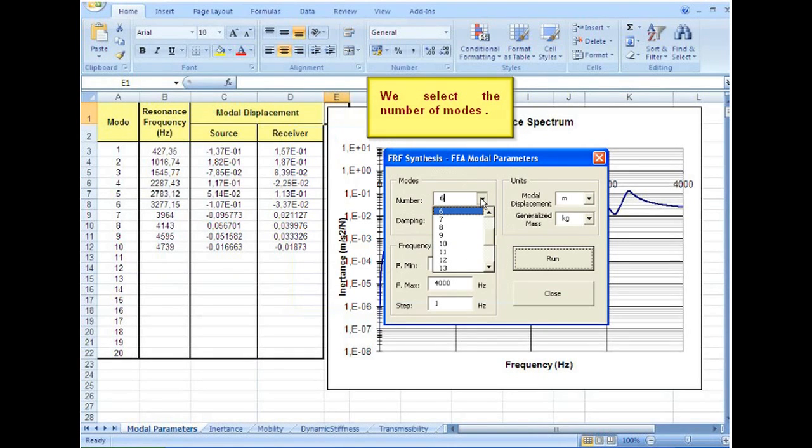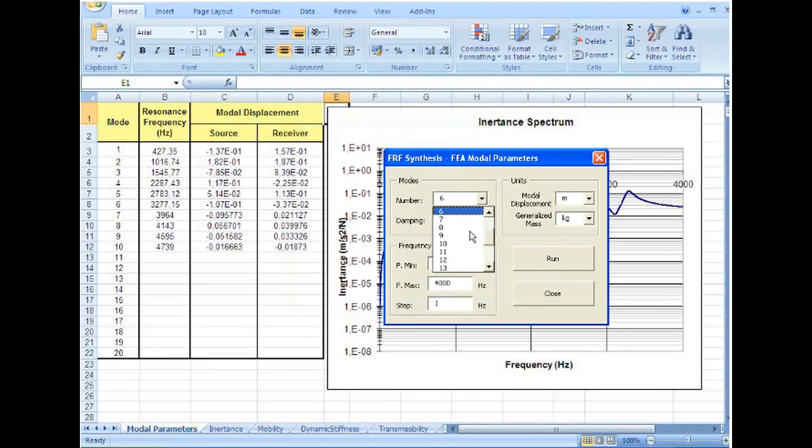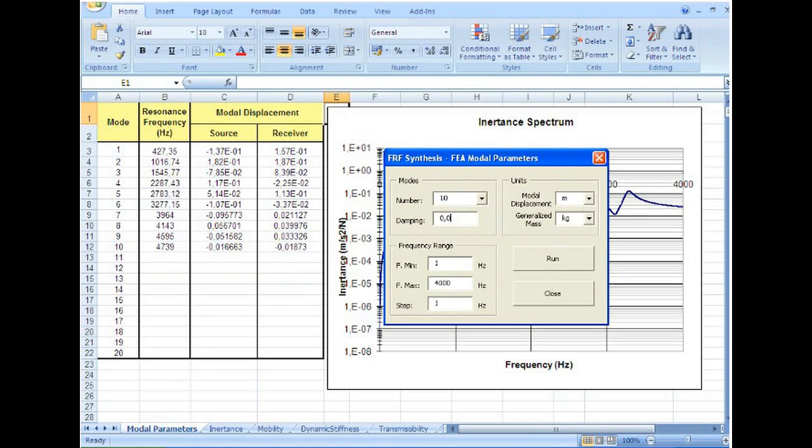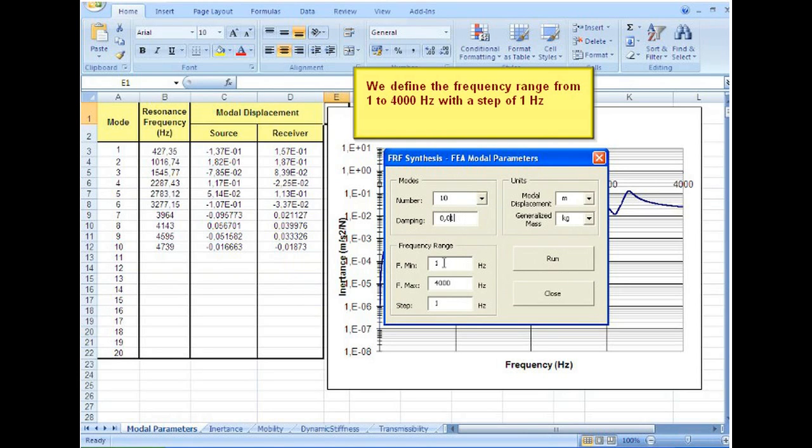We select the number of modes. We enter the damping value. Indeed, the FEA solver computes only resonance frequency and mode shapes. We define the frequency range from 1 to 4000 Hz with a step of 1 Hz.